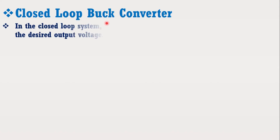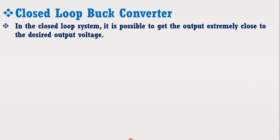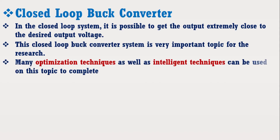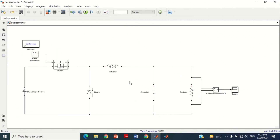Another method to get accurate results is to use a closed loop buck converter. In the closed loop system, it is possible to get the output extremely close to the desired output voltage. This closed loop buck converter system is very important for research. Many optimization and intelligent techniques can be applied to this topic for bachelor degree FYP projects. I have decided to make many videos on closed loop buck converter with various intelligent controllers to help you, so don't miss my future videos. I have uploaded this buck converter model as a link in the description section for you to download.